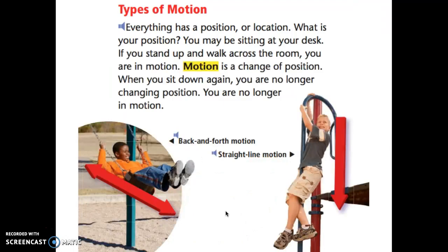Types of motion. Everything has a position or a location. What is your position right now? You may be sitting at your desk, maybe on a wobbly stool, or out in the collaboration area. If you stand up and walk across the room, you are in motion. Motion is a change of position. So when you sit down again, you are no longer changing your position, so you are no longer in motion.